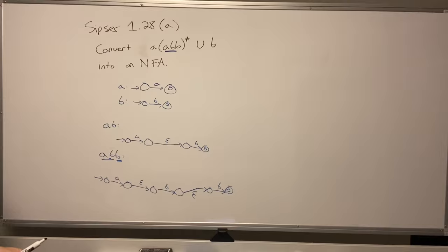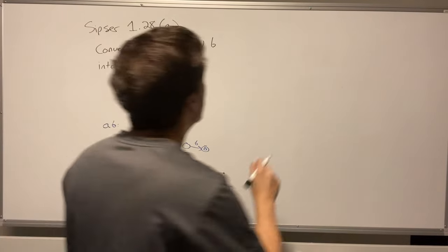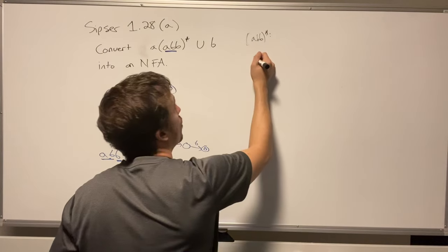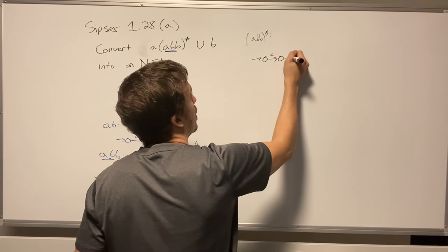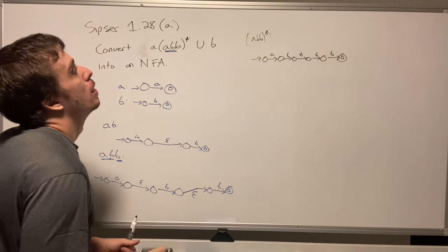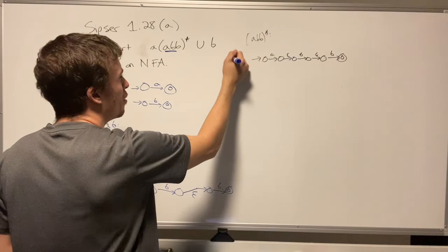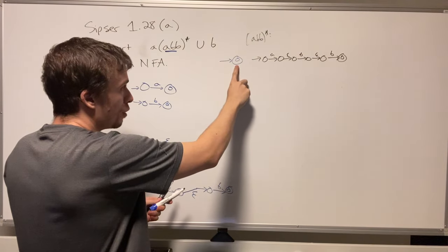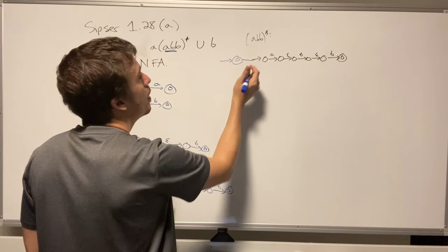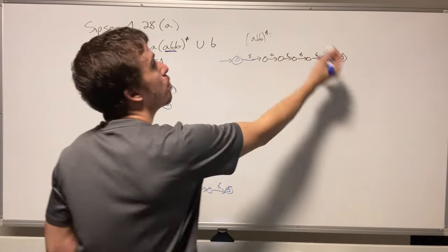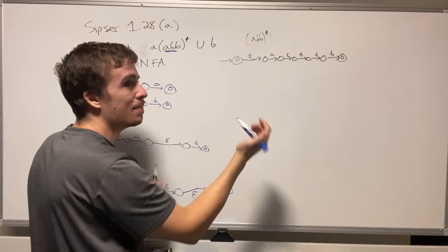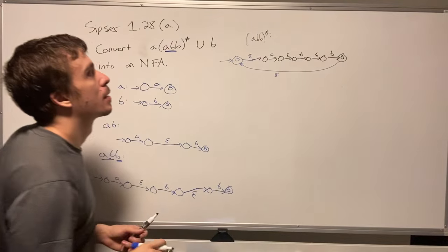Now let's put a star on 'abb' to get 'abb*'. I copy down the 'abb' machine — which has transitions a, epsilon, b, epsilon, b — and for the star operation I make a new start state, which must be a final state because the empty string is in the star of anything. I add an epsilon transition from this new start state into the old start state, and every final state in the original machine epsilon-transitions back to the new start state.